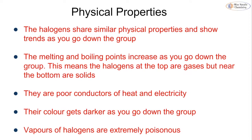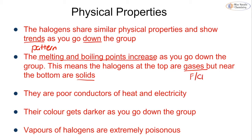The halogens share similar physical properties and as you go down the group you can see a trend — a trend just being another word for a pattern. As we go down the group from fluorine to astatine, we see an increase in the melting and boiling points. That means the halogens at the top of the group are gases — fluorine and chlorine — but near the bottom they are solids — iodine and astatine. Bromine is one of only two liquids on the periodic table at room temperature, the other being mercury.